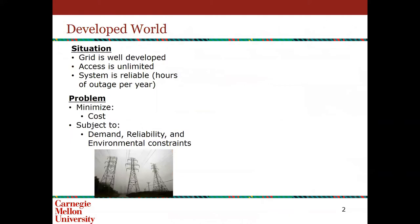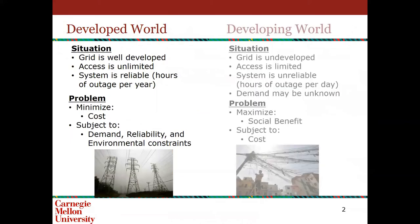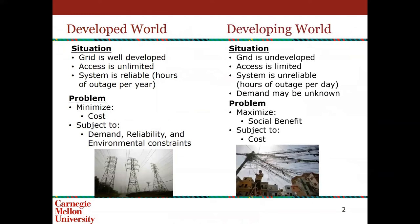In the developed world, we've seen a lot of these models — the optimization model is to minimize costs subject to demand, reliability, and environmental constraints. But in the developing world, the problem kind of flips on its head due to the grid being underdeveloped, access being limited, and the system being considered unreliable. So the problem becomes to maximize social benefits subject to a cost.